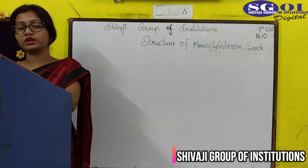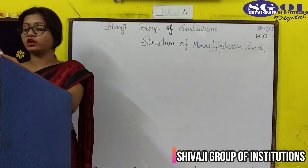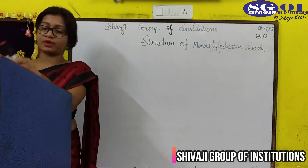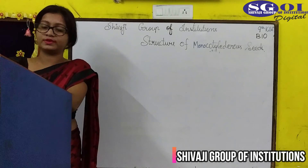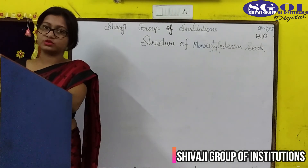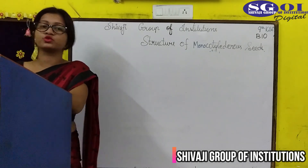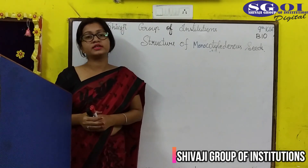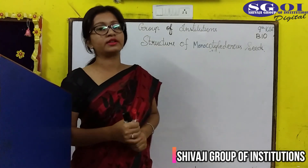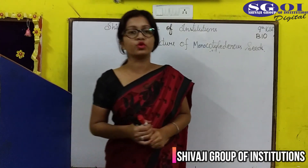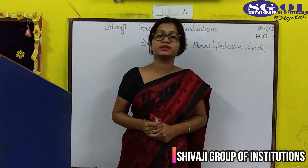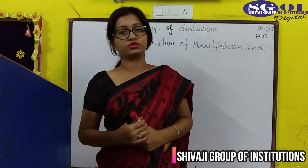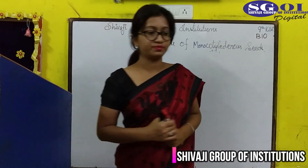All other parts — the plumule, radicle, and coleoptile — are the same as in other seed structures. So students, that is all about food storage in seeds, the structure of monocotyledonous seeds, and the structure of dicotyledonous seeds. That's all for today. Thank you.